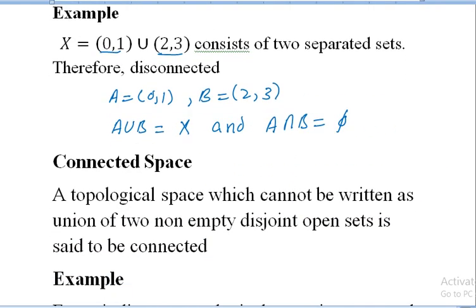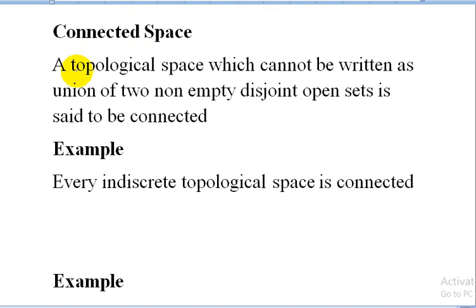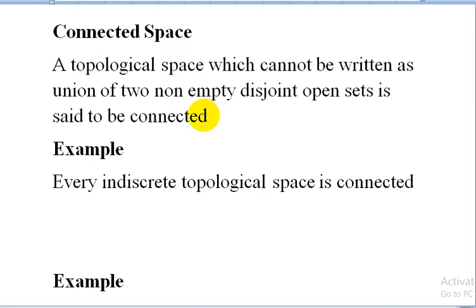The next definition is connected space. A topological space which cannot be written as the union of two non-empty disjoint open sets is said to be connected. If for a topological space we cannot find two non-empty disjoint open sets, then the topological space is connected. In other words, if a topological space is not disconnected then it is connected. So connected and disconnected are two opposite concepts.